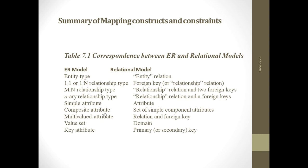A simple attribute is included as a simple attribute; a composite attribute is a set of simple attributes together. A multi-valued attribute requires a new relation with a foreign key and the multi-valued attribute. The value set specifies the domain, and the key attribute becomes the primary key.